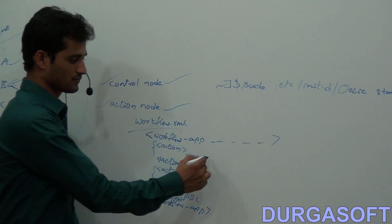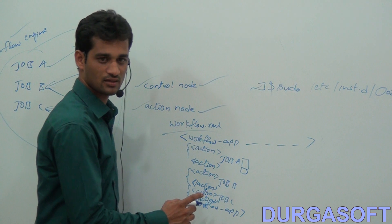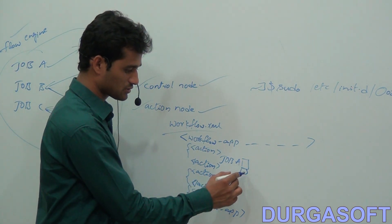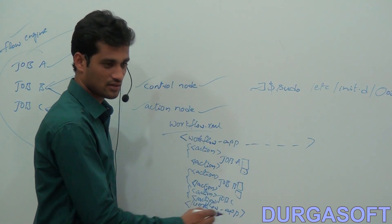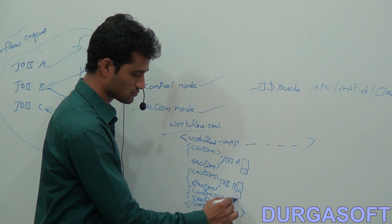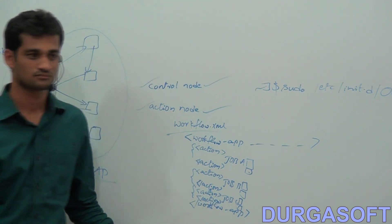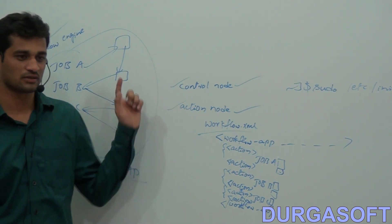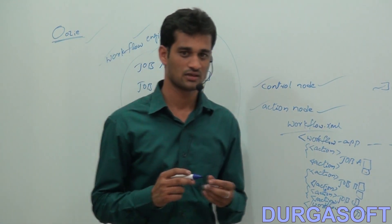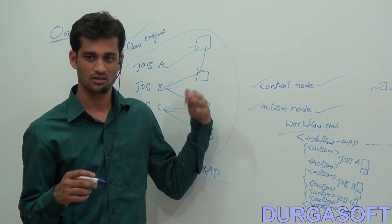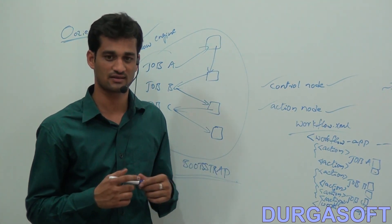So here we are giving an input directory and an output directory for Job A. That output directory becomes the input directory for Job B, which gives another output directory. That output directory is passed as input for Job C, which finally gives the final output directory. This is the overall idea about Oozie. We will see the practical implementation in the next class.